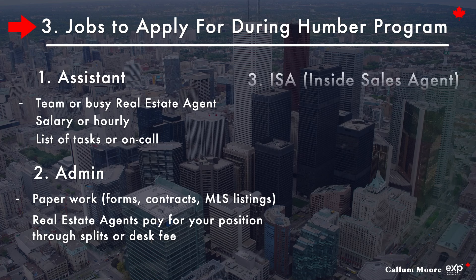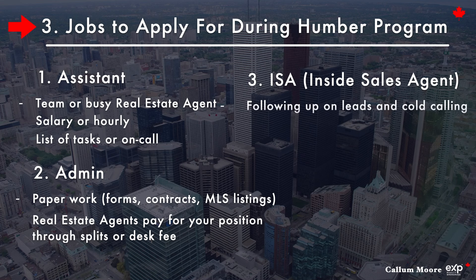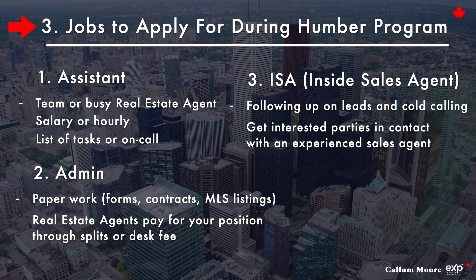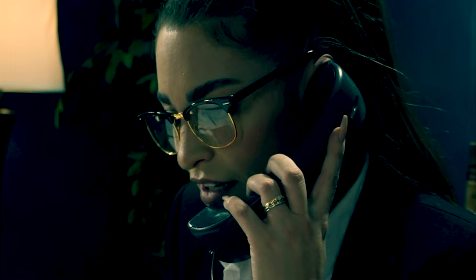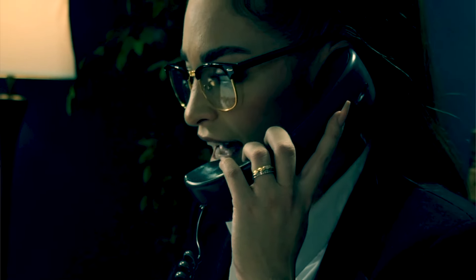This position is called an ISA — an Inside Sales Agent or Internal Sales Agent — and the job can consist of following up on leads or cold calling. The job of an ISA is to get interested parties in contact with experienced sales agents. You qualify them on the phone, get information, and pass them along to realtors you are working for. In this industry, being able to carry on good conversations with strangers about real estate and build relationships is a high-ticket skill. It's all about the numbers — a certain number of phone calls will lead to a certain number of sales.